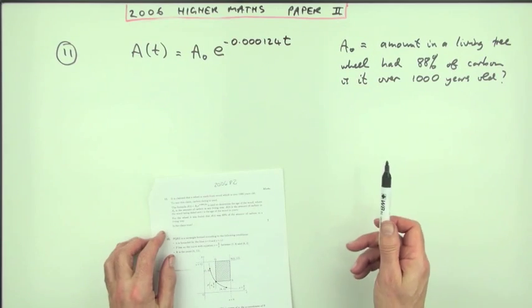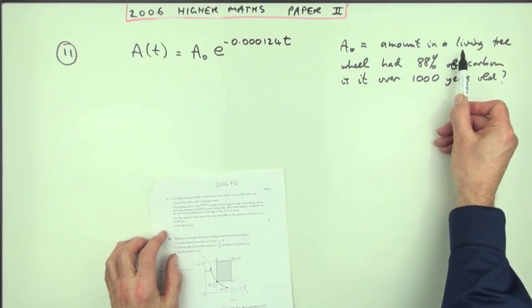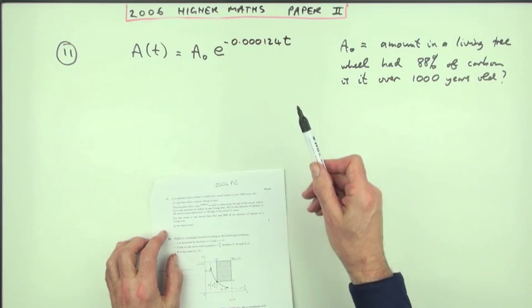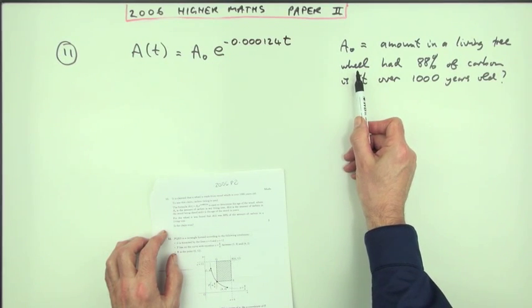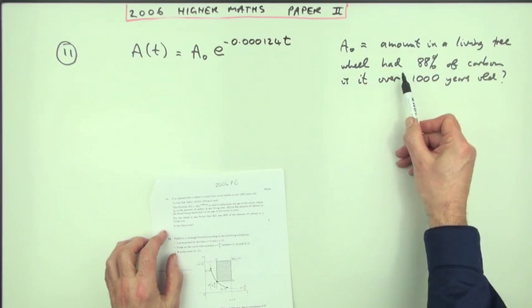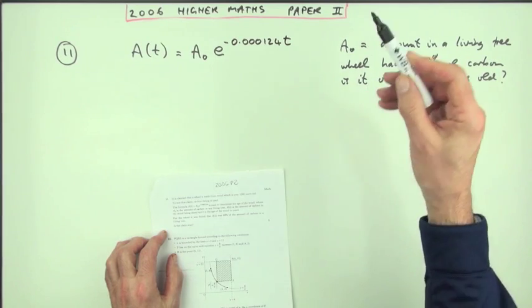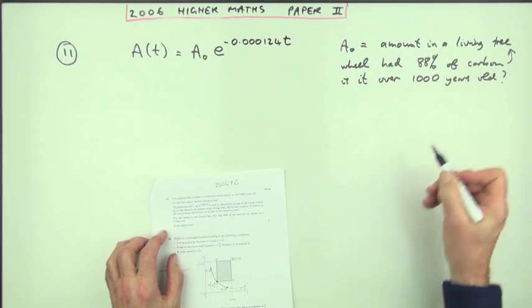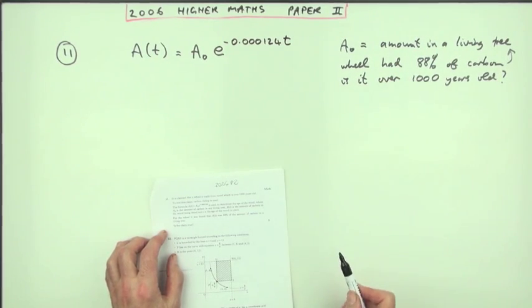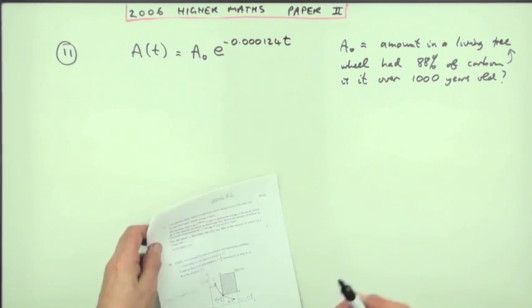All the information here is A0 stands for the amount of carbon in a living tree. There was a wheel that was found, made of wood, that had 88% of the carbon you would expect to find in a living tree. So does that make it over a thousand years old? Five marks.